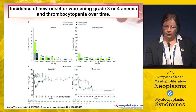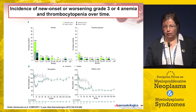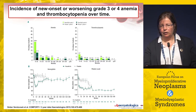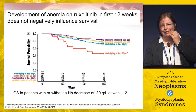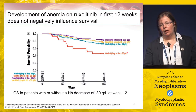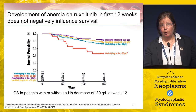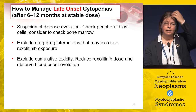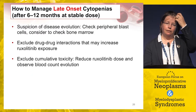From the COMFORT data, hemoglobin typically falls by roughly 10–20% by rule of thumb and then returns towards baseline, while platelet count falls by around 30–40% and remains static. Early anemia on ruxolitinib in the first 12 weeks does not correlate with poor survival, whereas progressive anemia not attributable to early treatment is associated with the poorest survival. Late-onset cytopenias are completely different — they should raise suspicion of disease evolution.